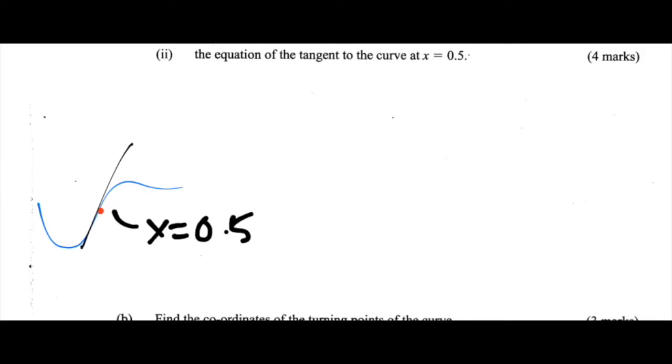So let's recall the equation of this curve, y. The equation of the curve is 2x cubed minus 9x squared plus px, which we learned in part A1 is 12. So plus 12x minus 1.